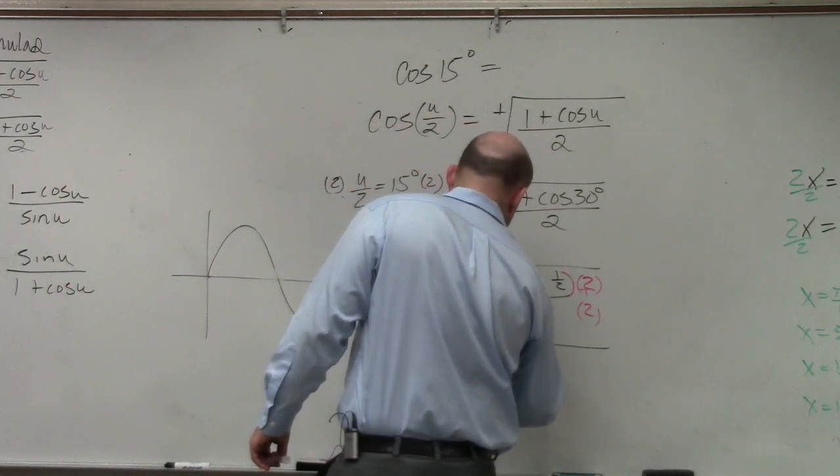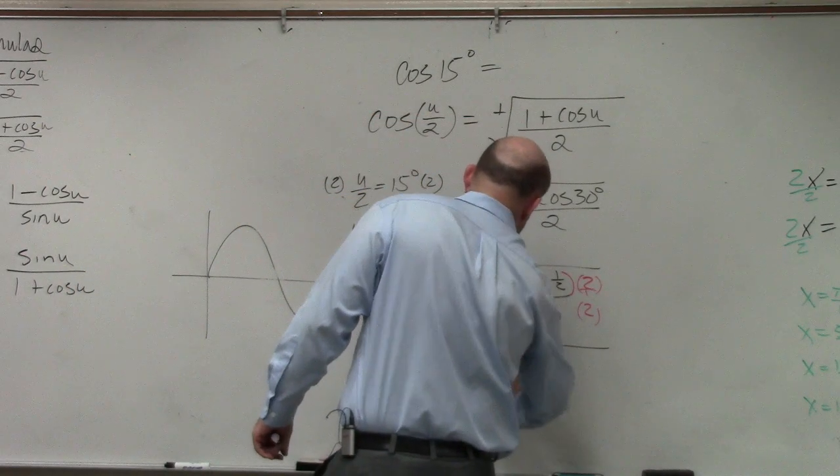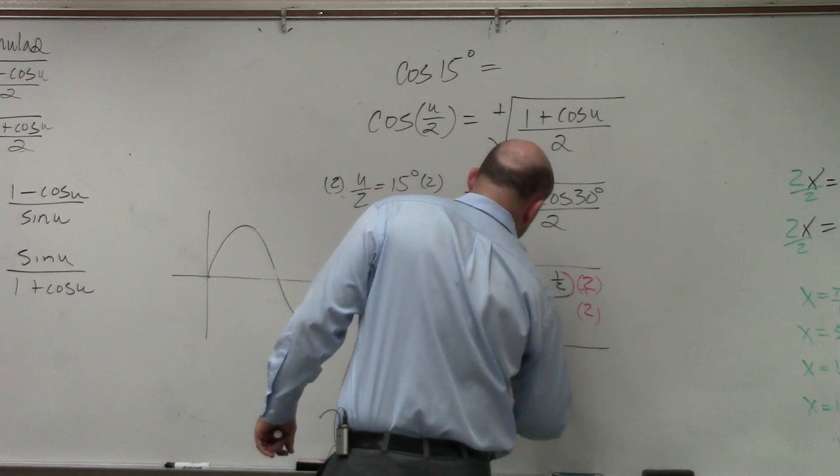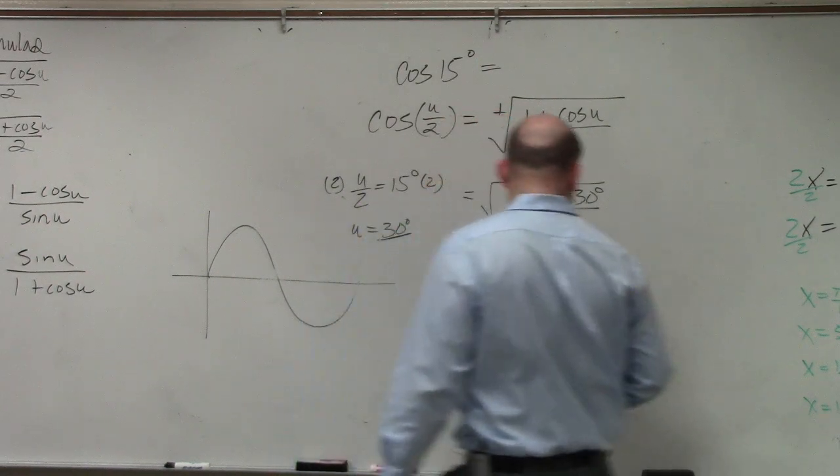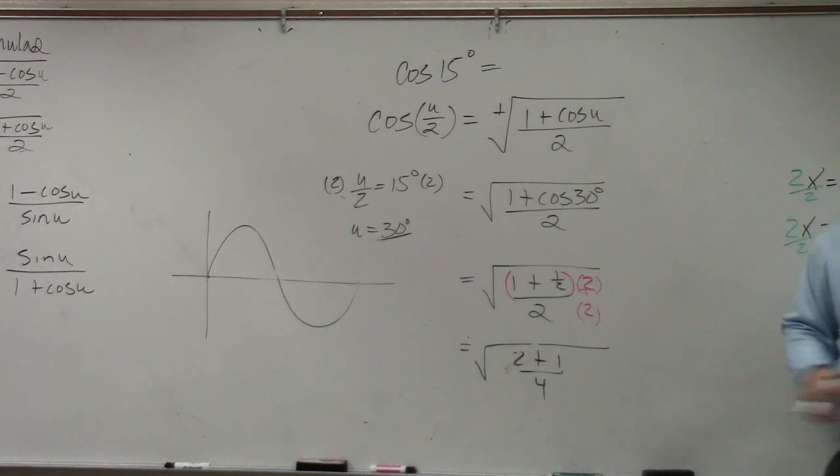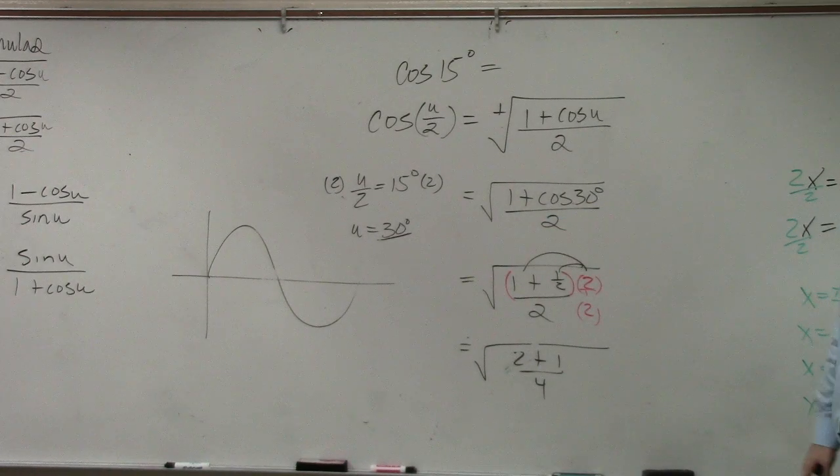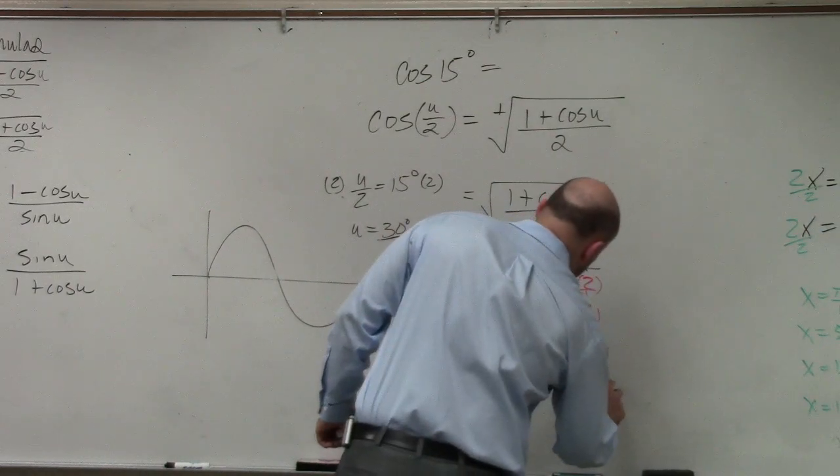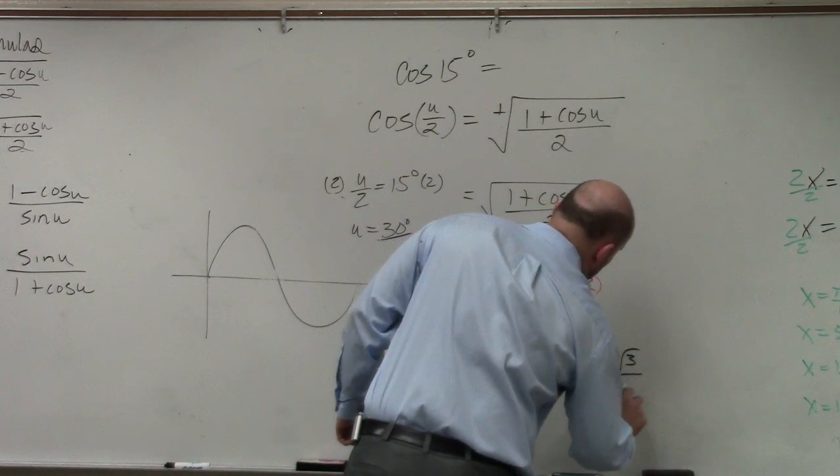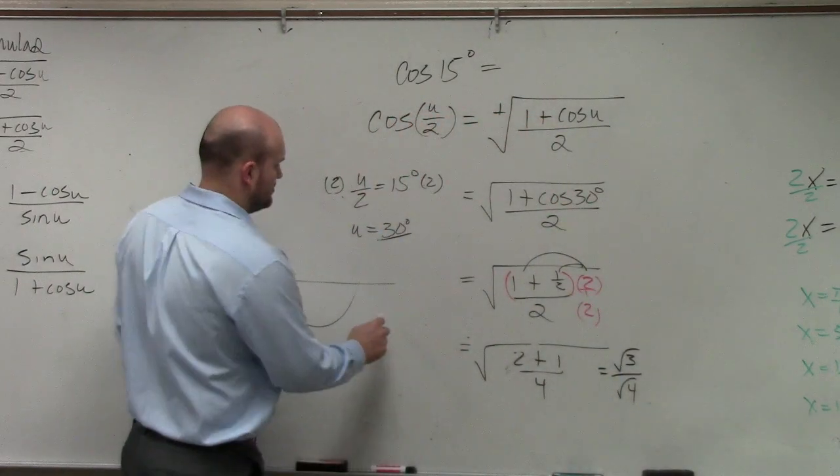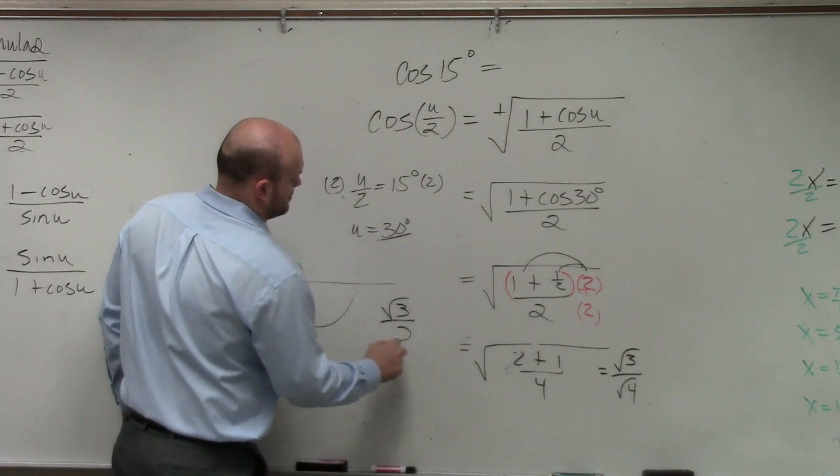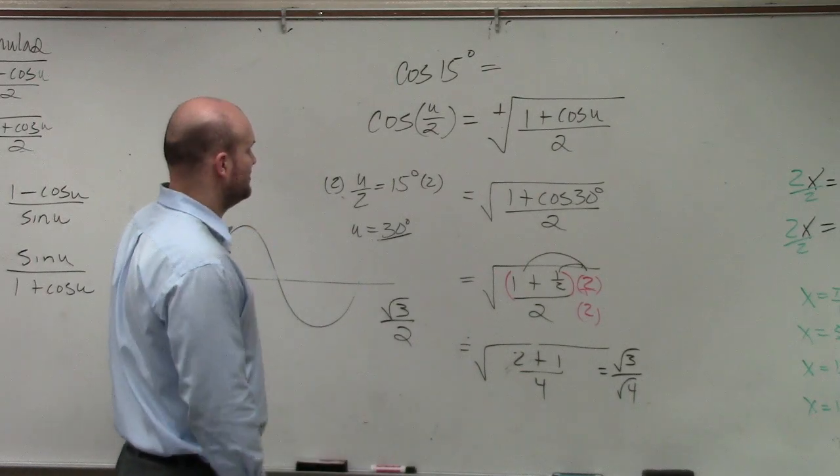So therefore, I'm going to be left with 2, or basically that will be 2 plus 1 over 4. Then, the next thing is, now what we can basically do is simplify that. That's going to be 3. Can you take the, you can break that apart into the square root of 3 over the square root of 4. And the square root of 4 is, wait a minute, what the heck happened?